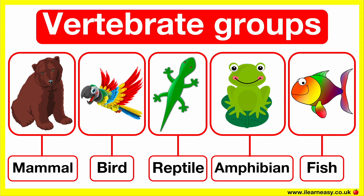Animals can either be vertebrates or invertebrates. Vertebrates are animals that have a backbone. There are five groups of vertebrates: mammals, birds, reptiles, amphibians, and fish.